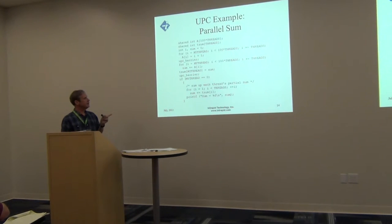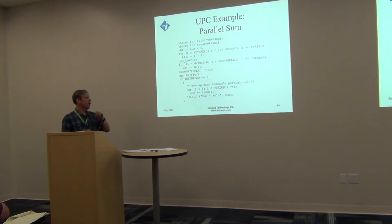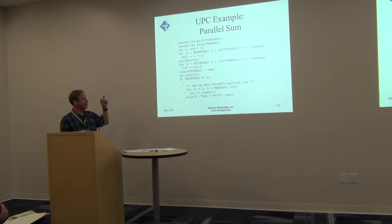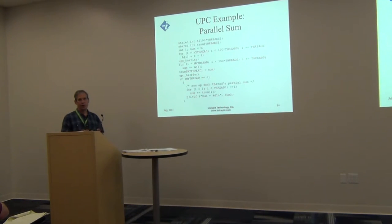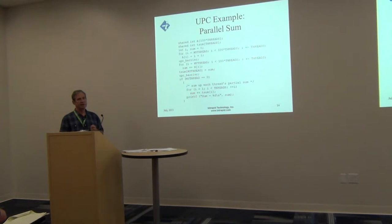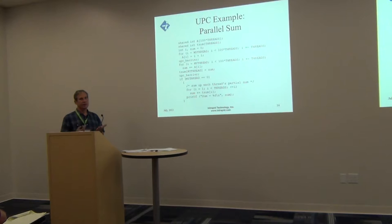The next for loop computes the local sum of elements to which each thread has affinity. There's actually a more efficient way — casting to a local pointer — but this example uses shared accesses to illustrate how they work. Internally, the runtime knows whether a reference is local to the thread or whether it needs to use the underlying communication network to cross nodes.